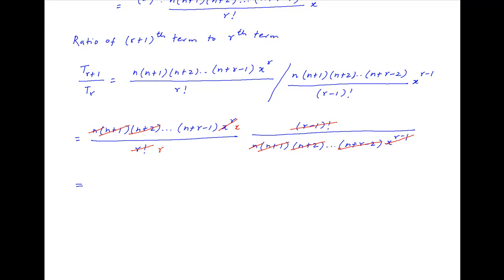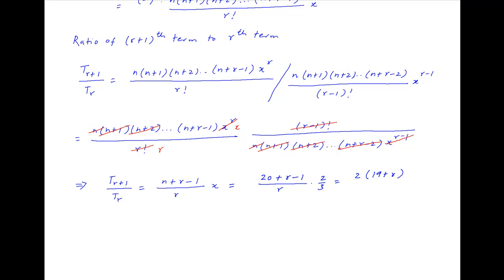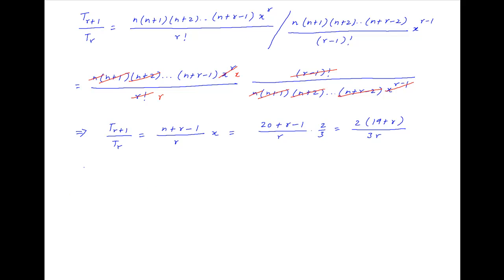Therefore, T(r+1) upon T(r) simplifies to (n+r-1) divided by r, multiplied by x. Substituting the values of n and x, we get (20+r-1) upon r times 2/3, which is equal to 2 times (19+r) divided by 3r.